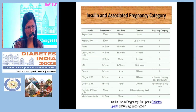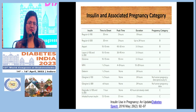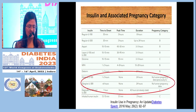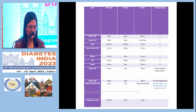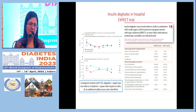Degludec has recently been approved for use in pregnancy based on new trial data — earlier it was not approved, but this year it has received approval. Glargine U100: guidelines say if a patient is already on glargine U100 and becomes pregnant, it can be continued. There are limited data for glargine U300 in pregnancy.